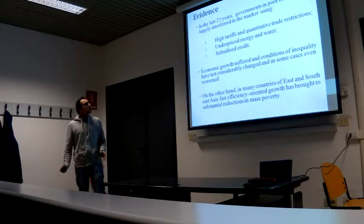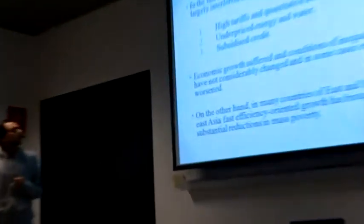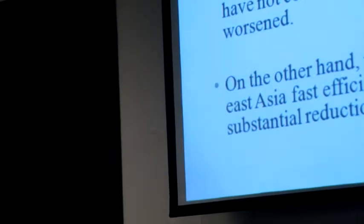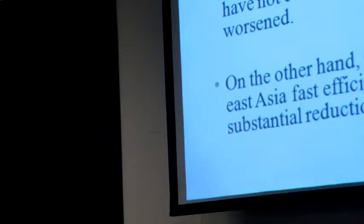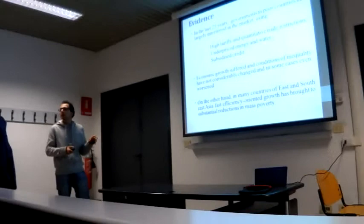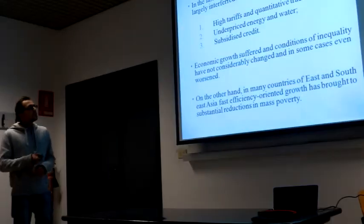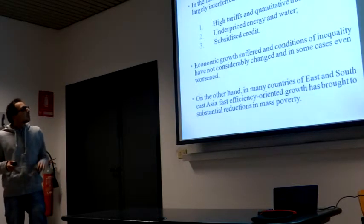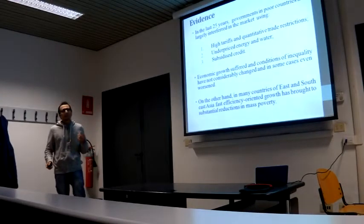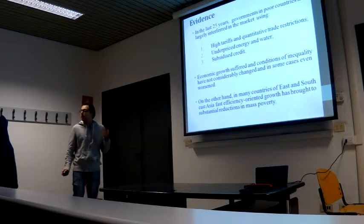In the last 25 years, governments in poor countries have interfered a lot in the market, and they did it mainly by three measures. They put high tariffs and quantitative trade restrictions to protect the economies. They provided underpriced energy and water, and they provided subsidized credit. This was done mainly by the greatest institutions in the world, that were the World Bank and the International Monetary Fund.